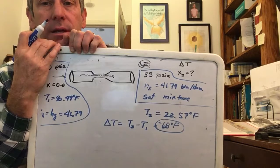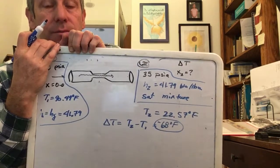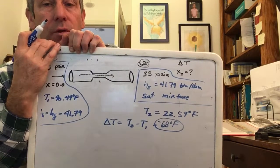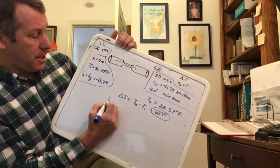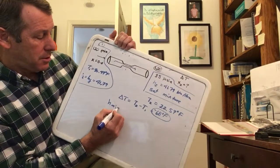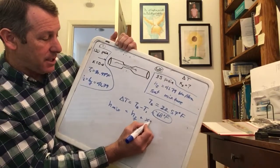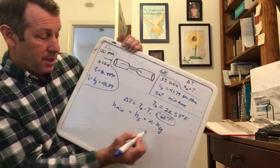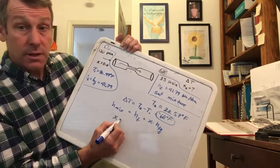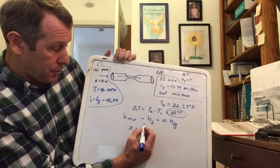Last thing is to get the quality at the outlet. We have h2 and we know our equation for a quality. We'll remind you of a mixture: h of a mixture is equal to hf plus x times hfg. So we can solve for x, the quality, is equal to...